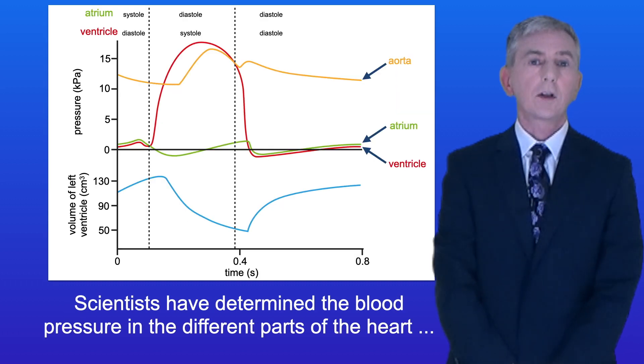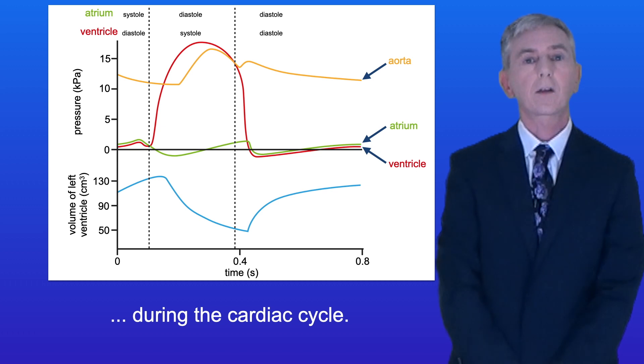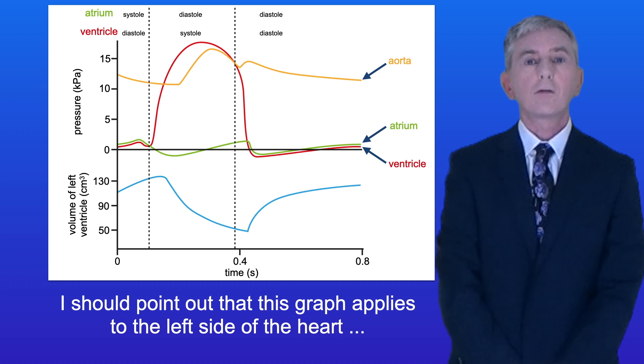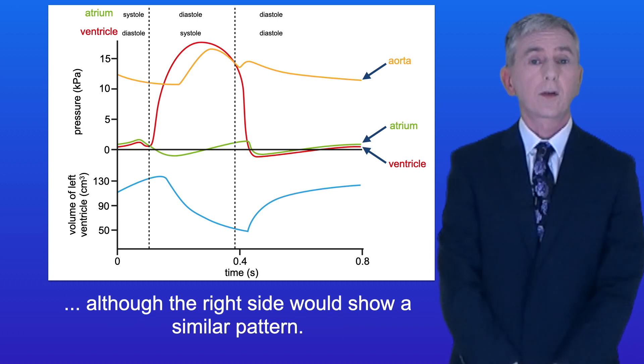Now scientists have determined the blood pressure in the different parts of the heart during the cardiac cycle and I'm showing you that on this graph here. I should point out that this graph applies to the left side of the heart, although the right side would show a similar pattern.